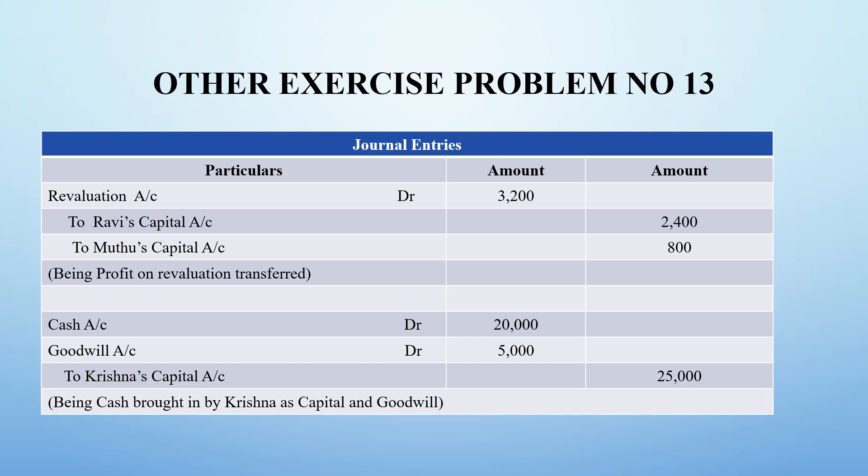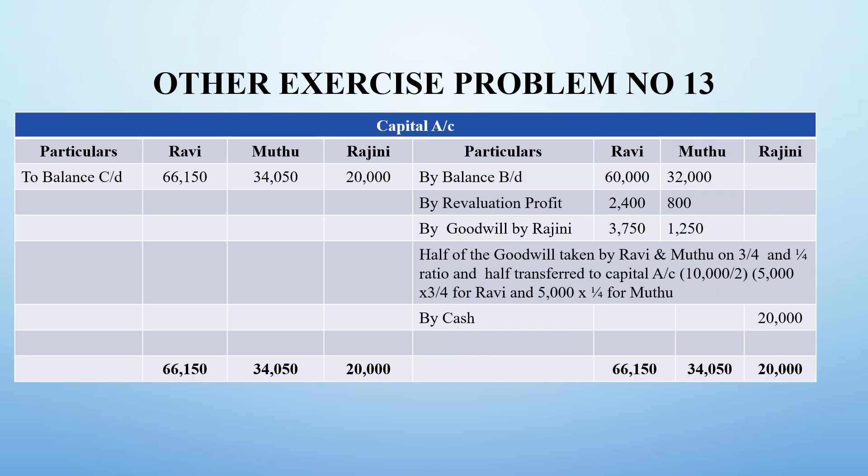The last journal entry is for the new partner Rajini, who has brought in capital and goodwill. Capital is Rs. 20,000 and goodwill is Rs. 5,000. Since this is coming into the business, cash or bank is debited. Rajini's capital account is credited. The total amount brought in by Rajini is Rs. 25,000.